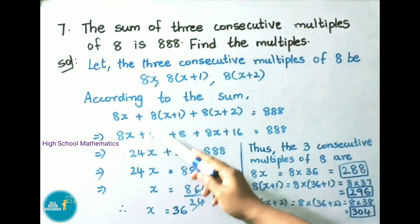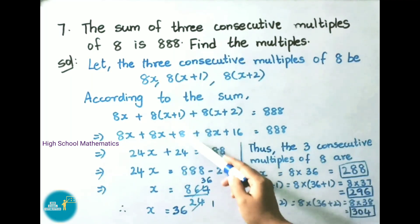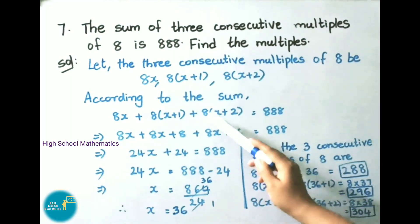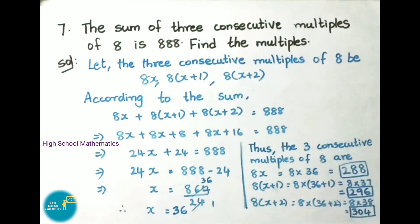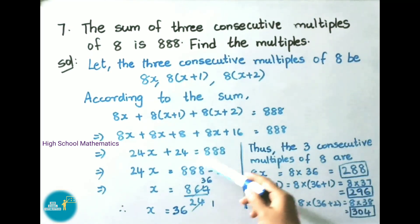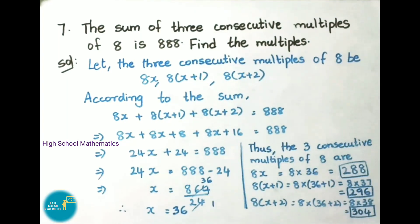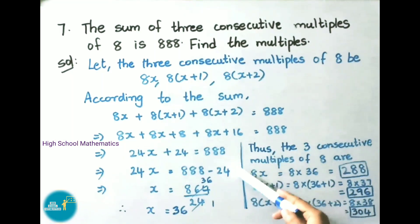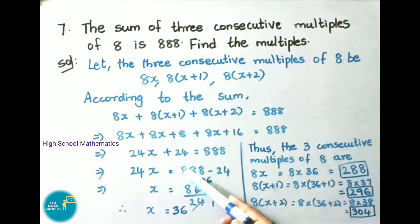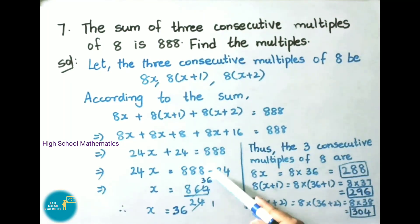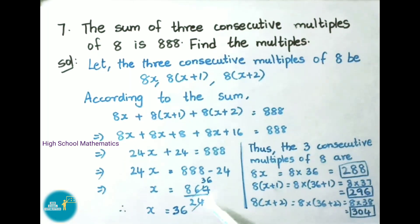Expanding: 8x plus 8x plus 8 plus 8x plus 16 equals 888. That implies 24x plus 24 equals to 888. On transposing, 24 becomes minus 24. So 888 minus 24 is 864. That implies 24x equals to 864. Here 24 is going to multiply; on transposing it becomes divided by. So x equals to 864 by 24.